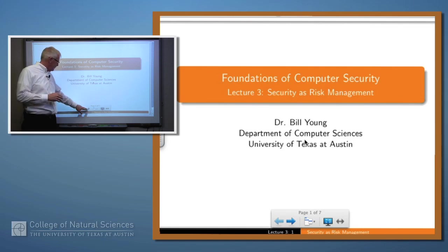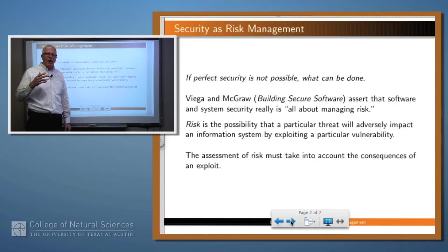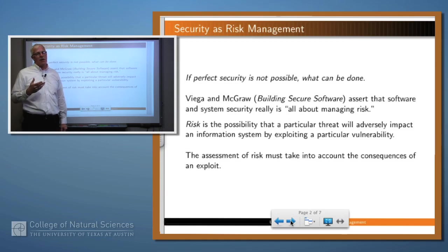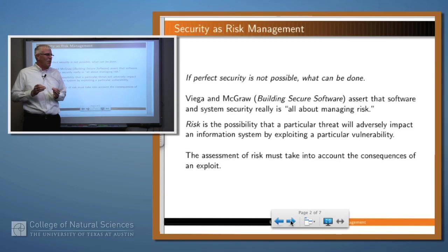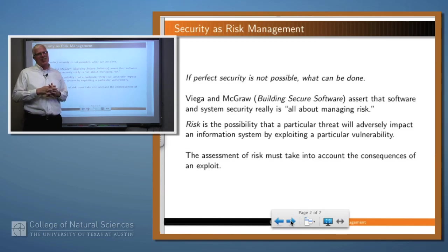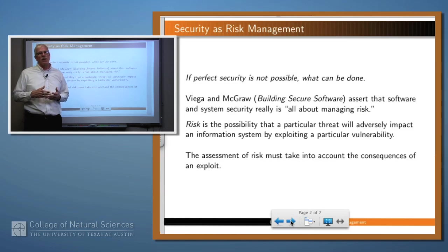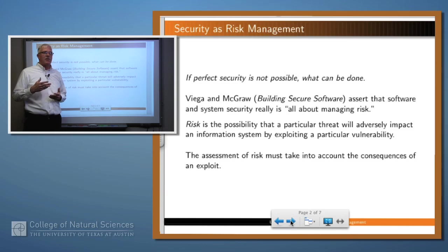What does that mean? In the last lecture I talked about why security is difficult. And so if you can't attain perfect security, how do you deal with that situation? Do you just throw up your hands and say security's no good because I can't have it? Well, no — that would be a hopeless situation. But two guys, Viega and McGraw, who wrote a very nice book called Building Secure Software, made the claim, and I agree with them, that system and software security is really all about managing risk.